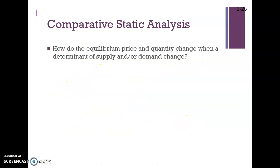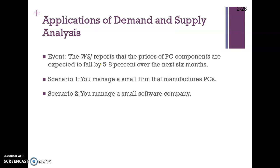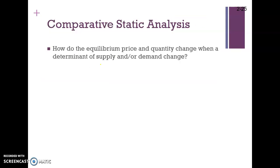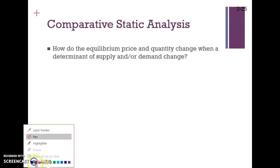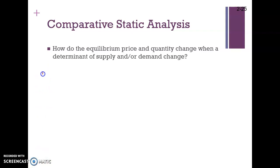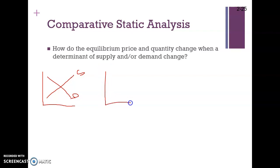To summarize: a price ceiling is the legal maximum and is effective when levied below the equilibrium price, always resulting in a shortage. An effective price floor always results in a surplus. Comparative static analysis examines how the equilibrium price and quantity change when determinants of demand or supply change.